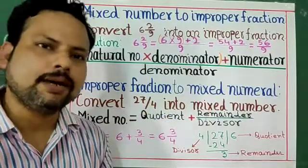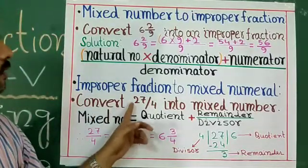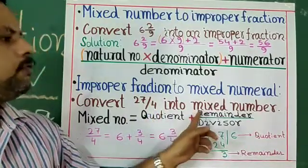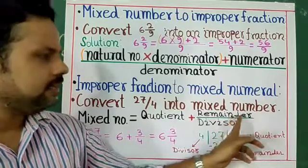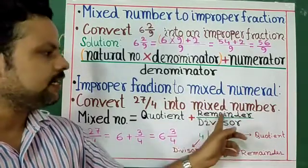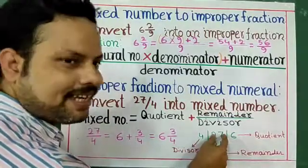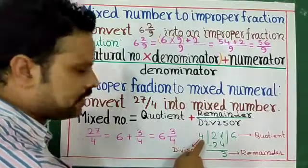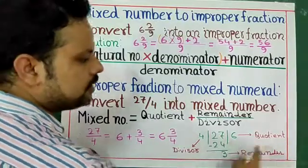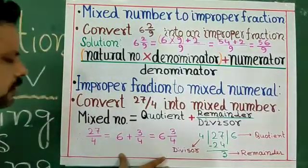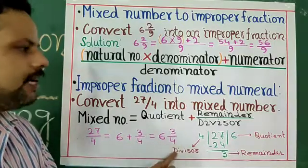Now the opposite — improper fraction to mixed number or mixed numeral. How to convert? Question: 27 by 4. We have to convert this into a mixed number. The process: quotient plus remainder by divisor. Simply we have to divide — numerator is the dividend and denominator is the divisor, which is 4. So 4 sixes are 24, subtract to get remainder 3. So 27 by 4 equals 6 whole 3 by 4.